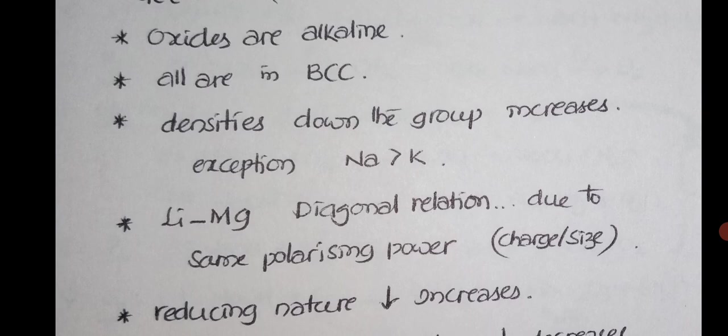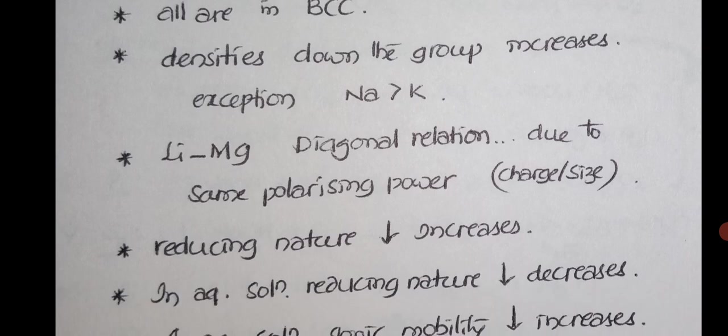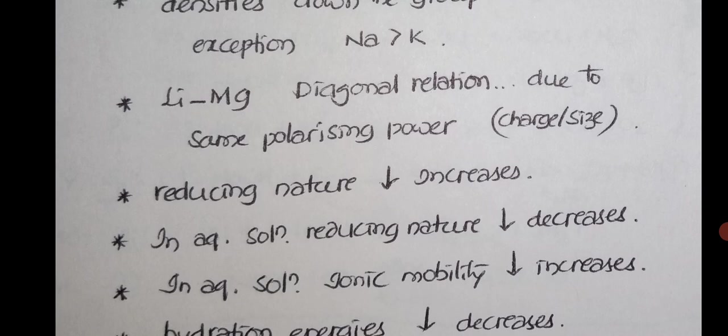Densities down the group increase, one exception: sodium density is greater than potassium. Very important point, repeatedly asked in exams. Lithium and magnesium exhibit a diagonal relationship due to same polarizing power, similar electronegativity, similar distance, atomic radius.